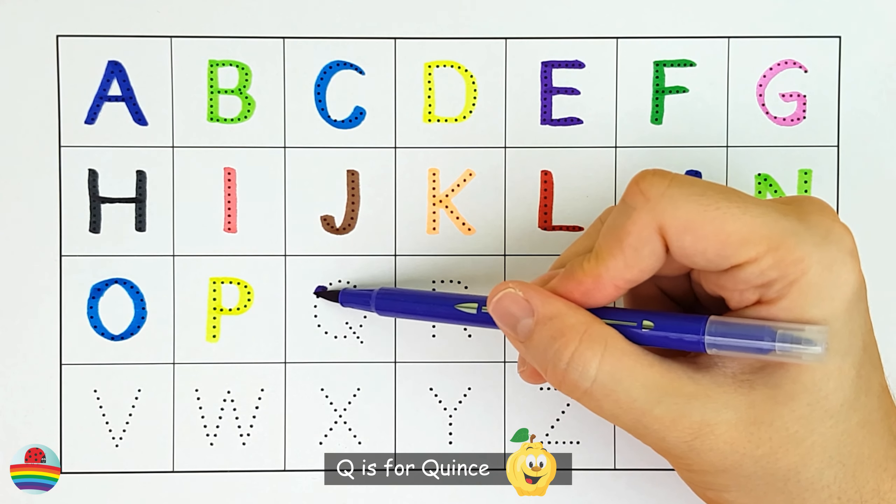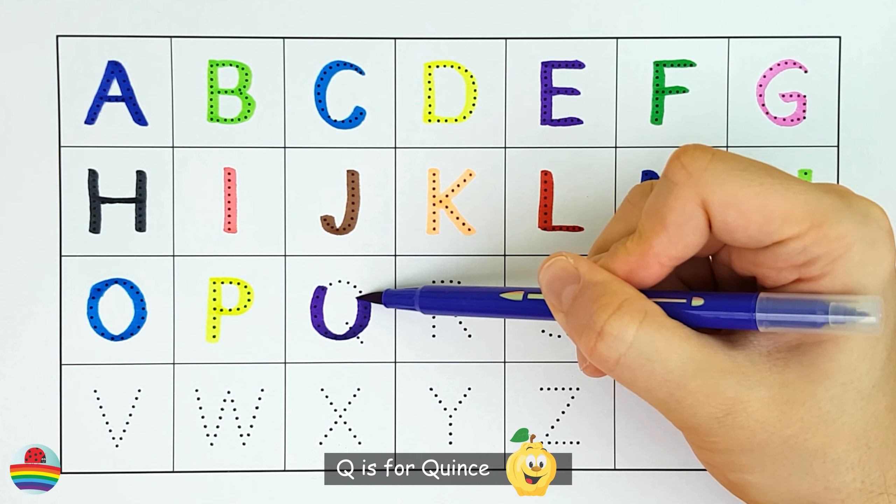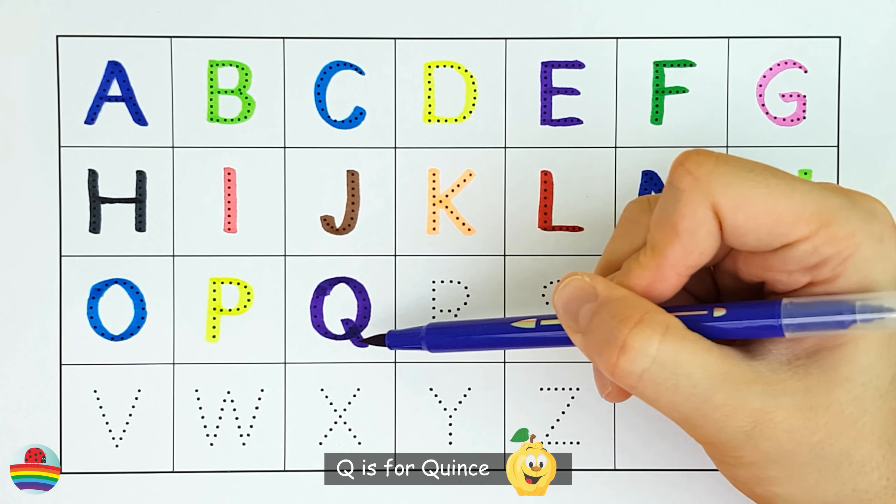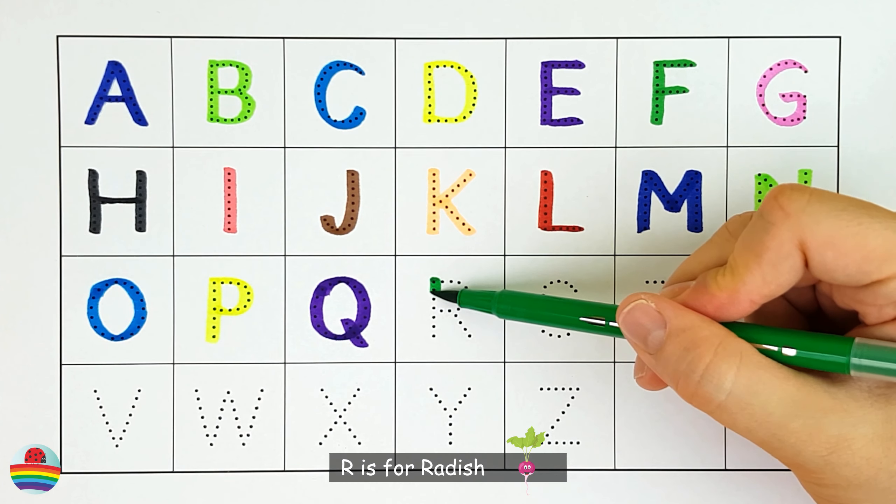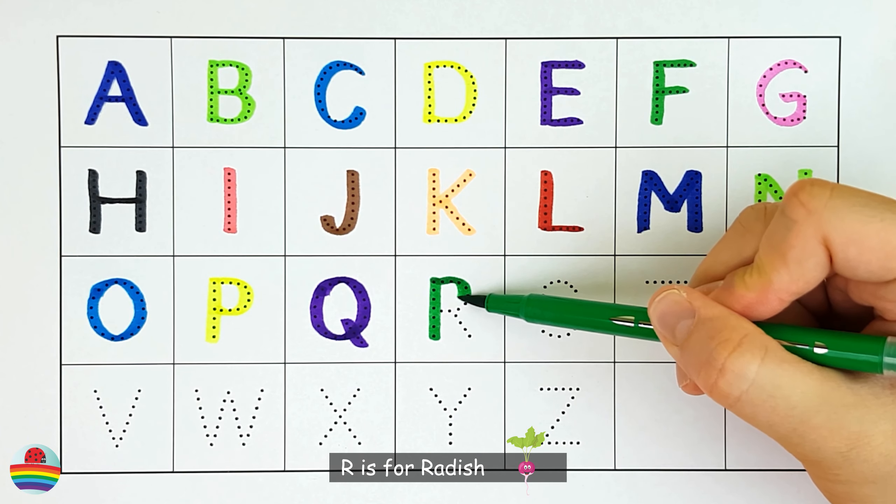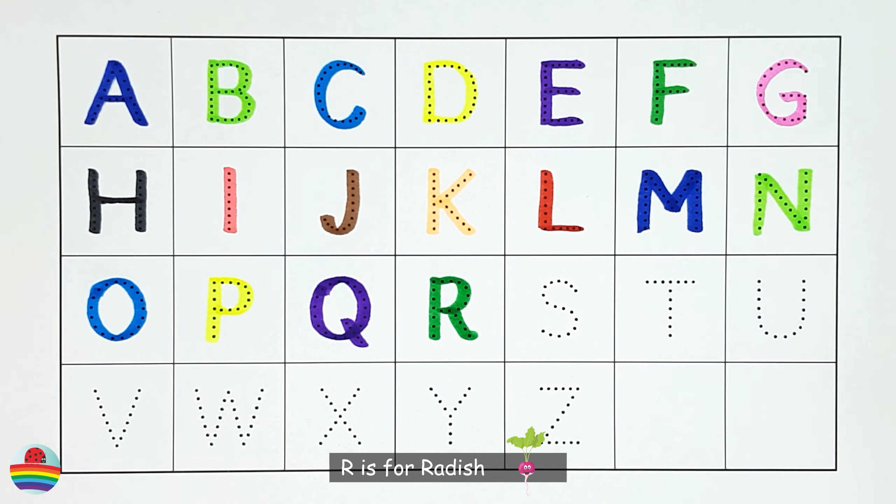Q. Q is for quince. Q. R. R is for radish. R.